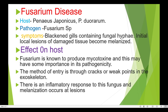Fusarium disease: the host includes Penaeus japonicus and Penaeus duorarum. The pathogen is Fusarium species. Symptoms include blackened gills containing fungal hyphae, and initial local lesions of damaged tissue become melanized. Fusarium is known to produce mycotoxin, which may have some importance in its pathogenicity.